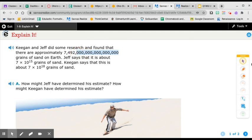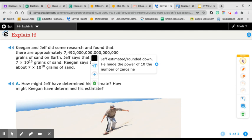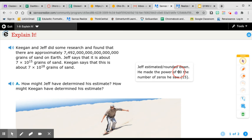So I think what, if I had to guess, if I were to say what Jeff did, Jeff estimated, right? So he rounded, and he rounded down, and then he made the power of 10 the number of zeros he saw, which is 15. So that looks like what Jeff did to me.